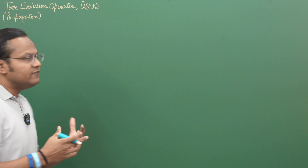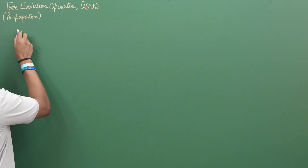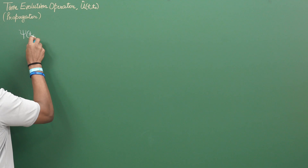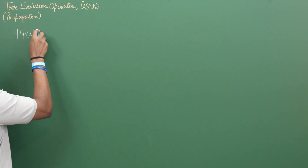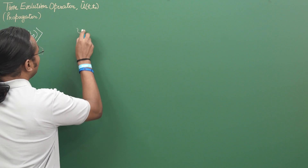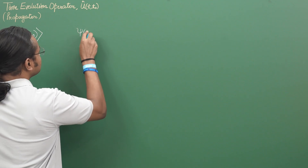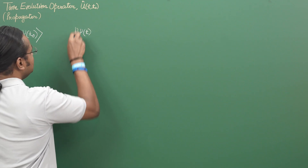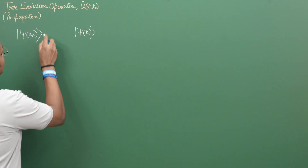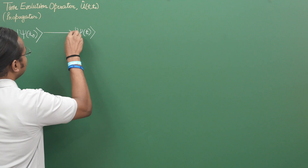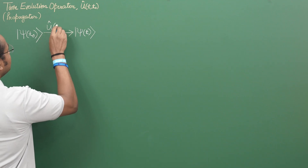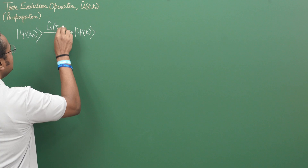First of all, if I take any kind of a quantum mechanical state, I will write this down as a psi ket at some time T0. I want to find out the quantum mechanical state for the same system at a later point in time T. If I write this down as psi ket, is there an operator that gives us an idea about its time evolution, which I write down as U-hat between T and T0?